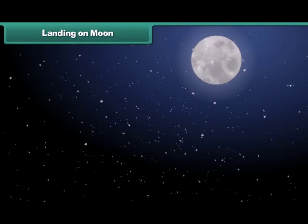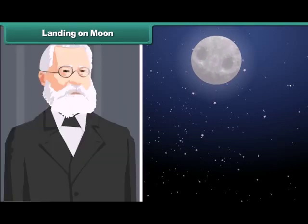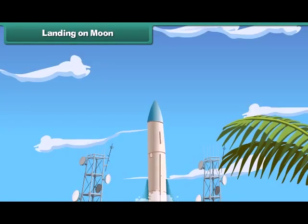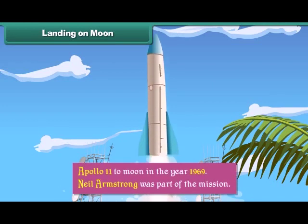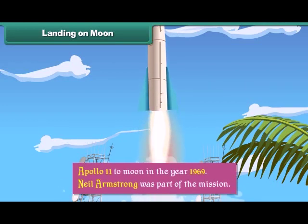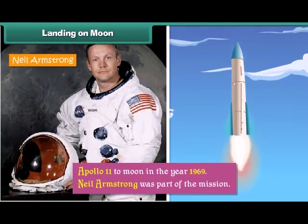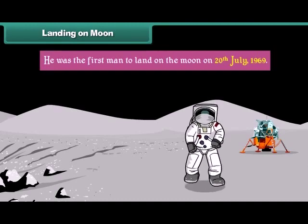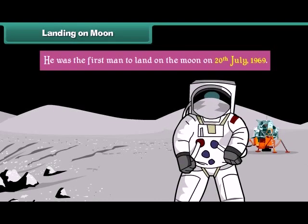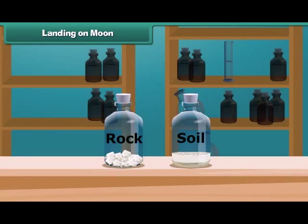Even though life is impossible on the Moon, it continues to fascinate scientists who wanted to learn more about it. Therefore, they sent a mission called Apollo 11 to the Moon in 1969. Neil Armstrong was part of the mission and was the first man to land on the Moon on 20th July 1969. He performed various experiments on the Moon and brought back samples of soil and rock.